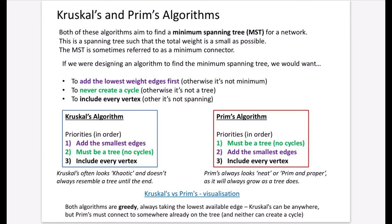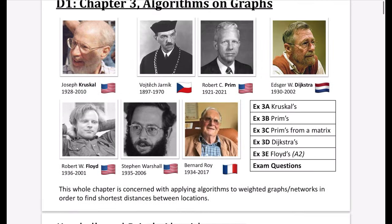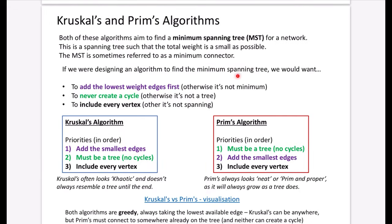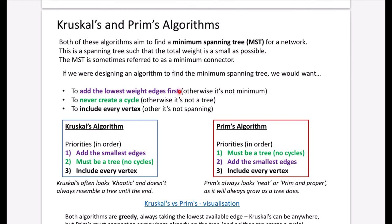Like connecting villages with fiber optic cable — this would be the minimum amount of cable required. If we were designing this algorithm ourselves, we'd want to add the lowest weight edges first, otherwise it won't be a minimum. We'd never want to create a cycle, because a tree has no cycles. And we'd want to make sure the algorithm included every vertex, otherwise it isn't spanning the whole network. So: minimum means lowest weights, tree means never a cycle, spanning means include every vertex.